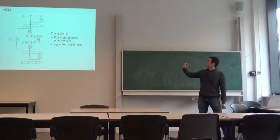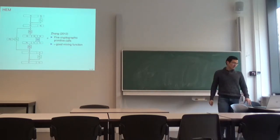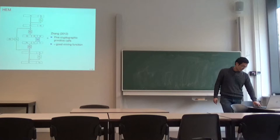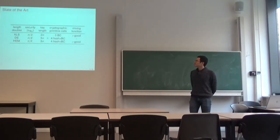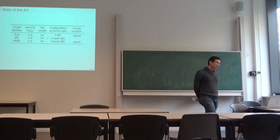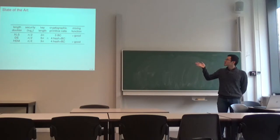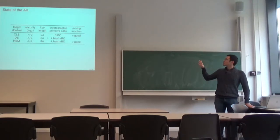Note that H_K5, the most left hash function, takes as input the length of the incomplete block, and this hash function can be calculated accordingly. Looking at the state of the art, every one of those three length doublers needs at least four cryptographic primitive calls.